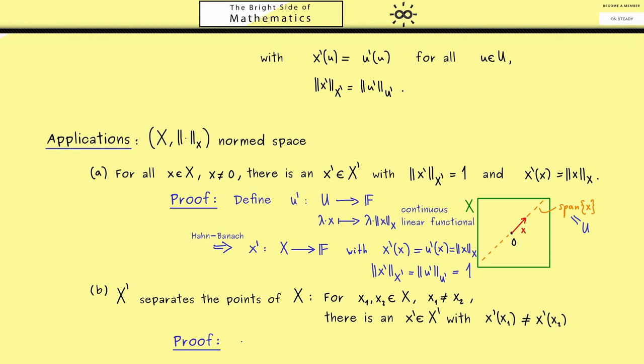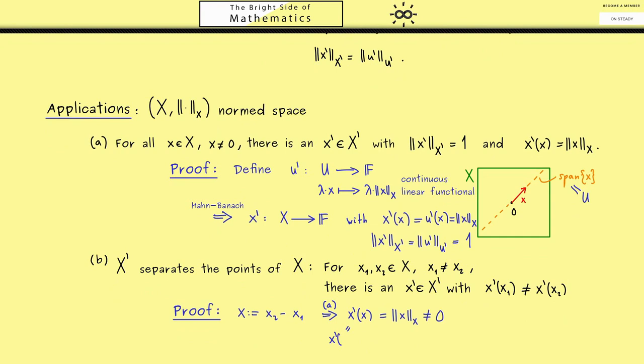In order to prove this I already told you we can just use (a). This works by defining x as the difference of x2 with x1. Because now we can use (a) and know that there exists an x prime with the property that x prime of x is exactly the norm of x. And the norm of x is not zero because x is not a zero vector. However we also know that x prime is linear. So we can rewrite this as x prime of x2 minus x prime of x1. Bringing this on the other side you see we immediately have what we want.